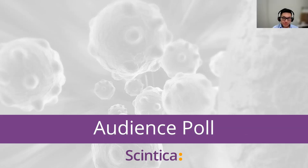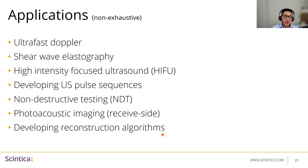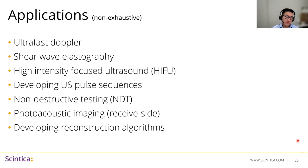We've covered most topics today. Just the last section: we'll go through a few papers — some proceedings, some published — showing examples of images achieved with the Prodigy. A few applications the Prodigy can be used for include ultrafast Doppler, shear wave elastography, HIFU, developing new ultrasound pulse sequences, non-destructive testing, photoacoustic imaging, and developing new reconstruction algorithms. This list is non-exhaustive — honestly a lot of it is up to your imagination. References are available at the bottom of each slide where applicable.